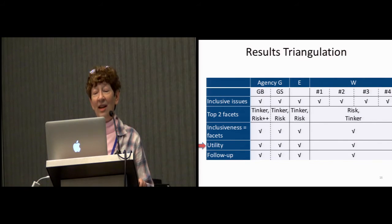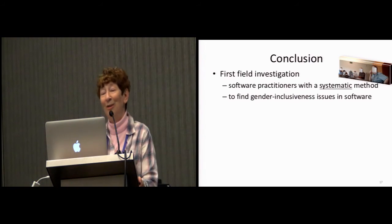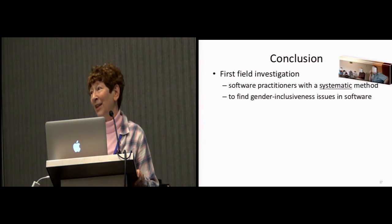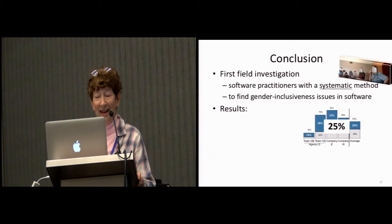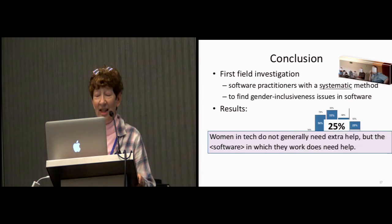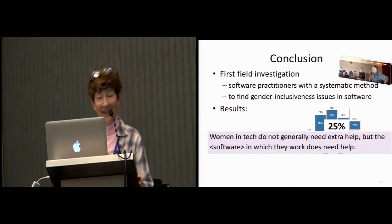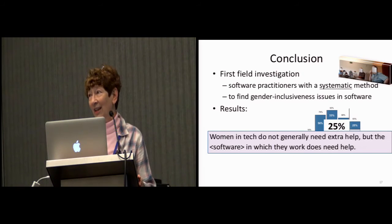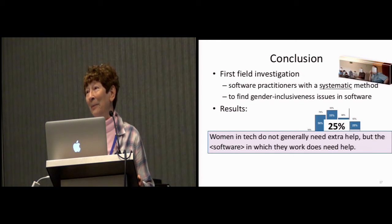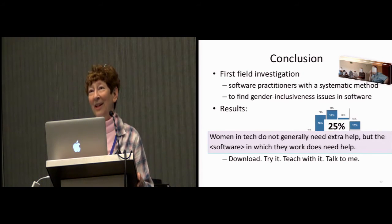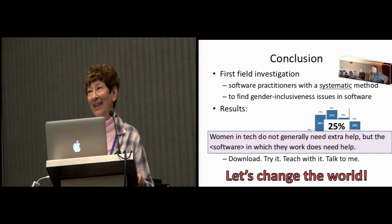In conclusion, this is the first field investigation of ordinary software practitioners using a systematic method to find gender inclusiveness issues in software — because if you can't find them, you can't fix them. Our results: one out of four of their features had gender inclusiveness issues that they found. A nice way to word this is a quote stolen from Ashcraft and DuBose: 'Women in technology do not generally need extra help, but the software in which they work does need help.' I hope you download it, try it, and teach with it — because I think it takes a village to really change things, and I'm on a mission to change the world.